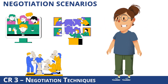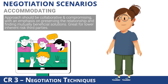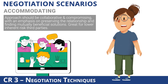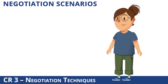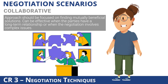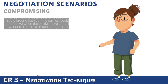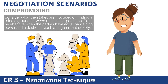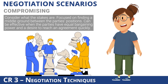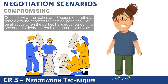Examples of negotiation scenarios can include but not be limited to: Accommodating — approach should be collaborative and compromising, with an emphasis on preserving the relationship and finding mutually beneficial solutions; this strategy is great for lower inherent risk third parties. Collaborative — approach should be focused on finding mutually beneficial solutions; this strategy can be effective when the parties have a long-term relationship or when the negotiation involves complex issues. Compromising — consider what the stakes are, if it is a higher risk versus low risk contract; this strategy is focused on finding a middle ground between the parties' positions and can be effective when the parties have equal bargaining power and a desire to reach an agreement quickly.